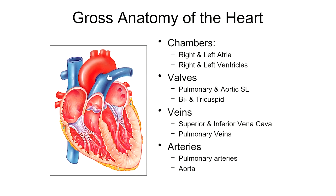This blood goes out to the lungs, picks up oxygen, and comes right back to the heart. Now we've got highly oxygenated blood, so the vessels are color-coded red. You can see two vessels entering into the left atrium — these are the left pulmonary veins, coming back from the left lung and bringing highly oxygenated blood back to the left atrium. On the other side, two more vessels come from the right lung, run behind the heart, and the right pulmonary veins also deposit their blood into the left atrium.